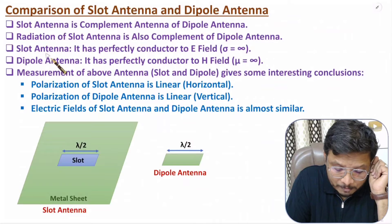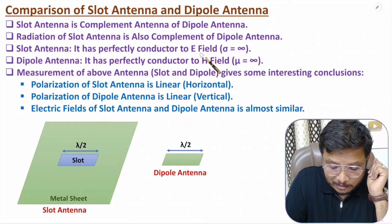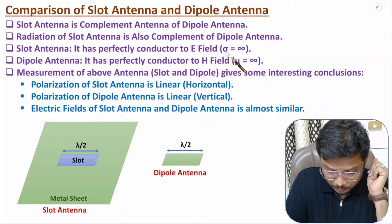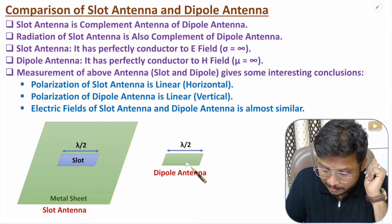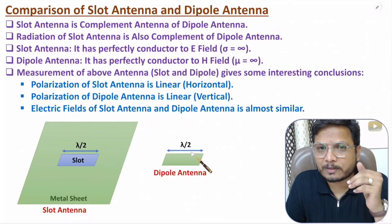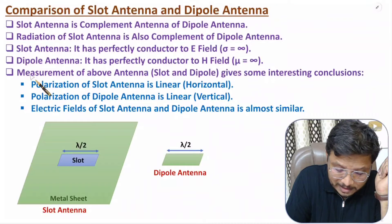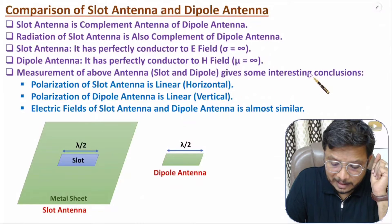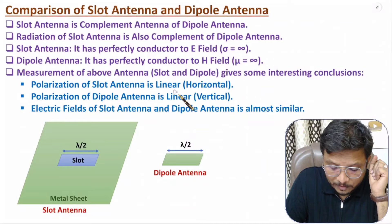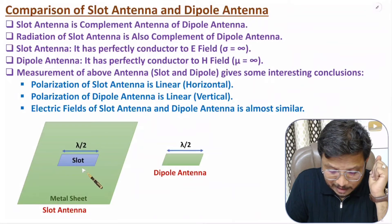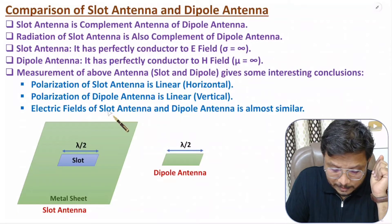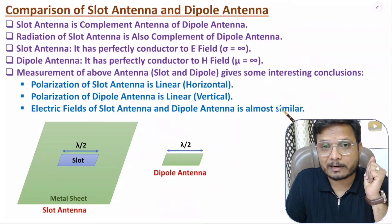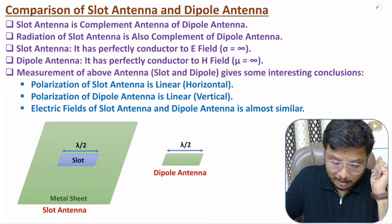If the slot is a perfect conductor with respect to electric field, conductivity is infinite. If the dipole is a perfect conductor, it is with respect to magnetic field, so permeability is infinite. That is why their radiation is also complementary. From measurement results: polarization of slot antenna is linear and horizontal. The complementary dipole antenna will have linear and vertical polarization. The electric fields of slot antenna and dipole antenna are almost similar but complementary.